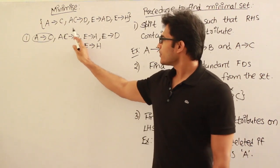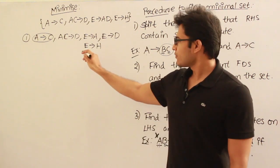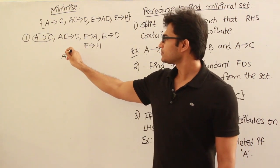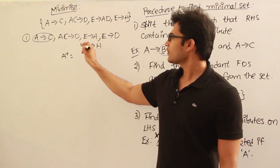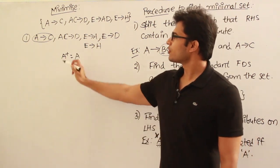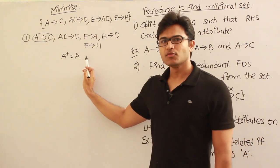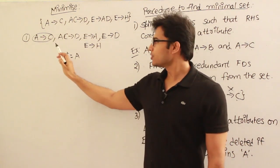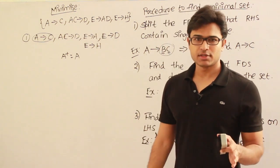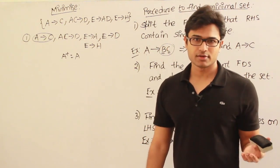Take A determines C and delete it. From the remaining, try to find A+. A+ gives only A — nothing else. Therefore A+ does not contain C, which means without this production A does not have the capacity to determine C. Therefore A→C is required.